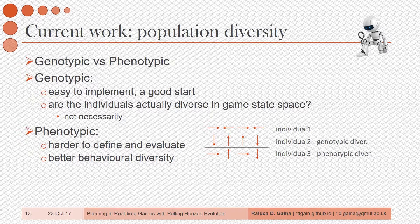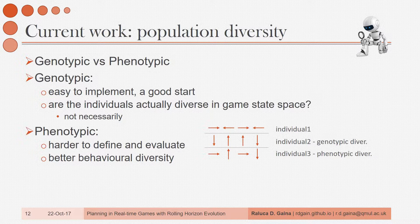One thing that is apparent through all of my experiments is that RHEA is not able to explore the search space effectively enough, and it appears to converge to an OK solution fairly quickly. So my current work is focused on obtaining a more diverse population during the search. However, we can look at this in two ways: at genotype level, obtaining individuals with different genes, or at phenotype level, obtaining individuals with different behaviour.